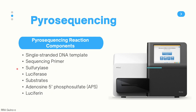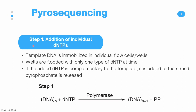The different components in a pyrosequencing reaction include single-stranded DNA templates, a sequencing primer, and some enzymes — sulfurylase and luciferase — along with their substrates, adenosine-5-phosphosulfate (APS) and luciferin. The first step is the addition of individual dNTPs. The template DNA, usually a PCR product, is immobilized in individual flow cells or wells, and these wells are flooded with only one type of dNTP at a time. If the added dNTP is complementary to the template, it is incorporated and pyrophosphate is released.